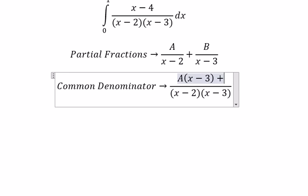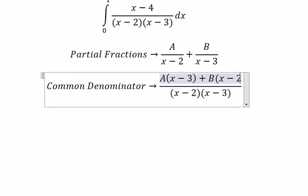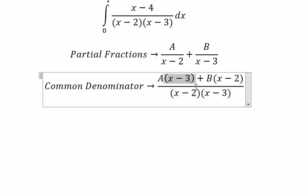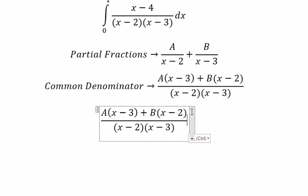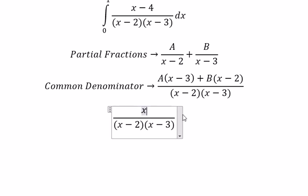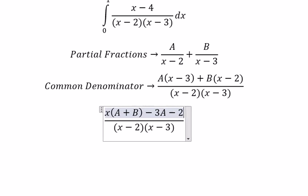So we need to arrange this: x multiply with (A+B), and we have -3A-2B. Now we can create the system of equations.